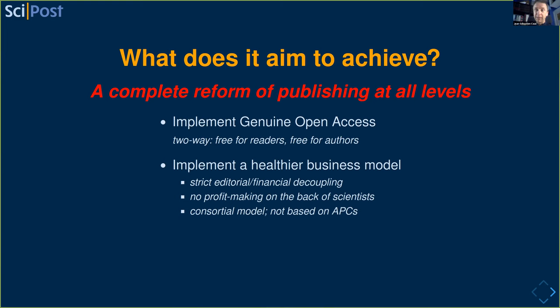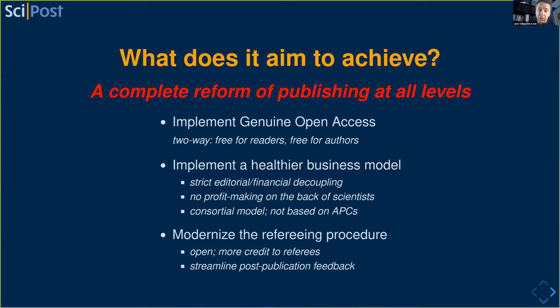We don't like article processing charges being installed as the new business model for publishing - essentially an author-pays model. The idea that you would do the work and then pay to have it published is not something we want. We view publishing much more as an infrastructure of academia, like the desk and chair at your university, your library. The process of publishing belongs to the academic community's infrastructure. We're trying to convince universities to fund SciPost as an infrastructure for academia. We also want to make refereeing more open, give much more credit to referees by making reports citable and visible.